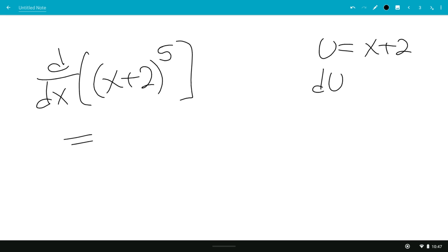So an example of this would be the derivative of x plus 2 quantity to the fifth power. So let's set u equal to x plus 2, du dx is 1.